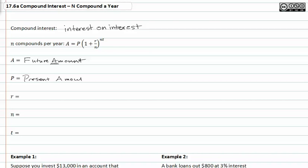R represents the interest rate, and n represents the number of compounds a year.